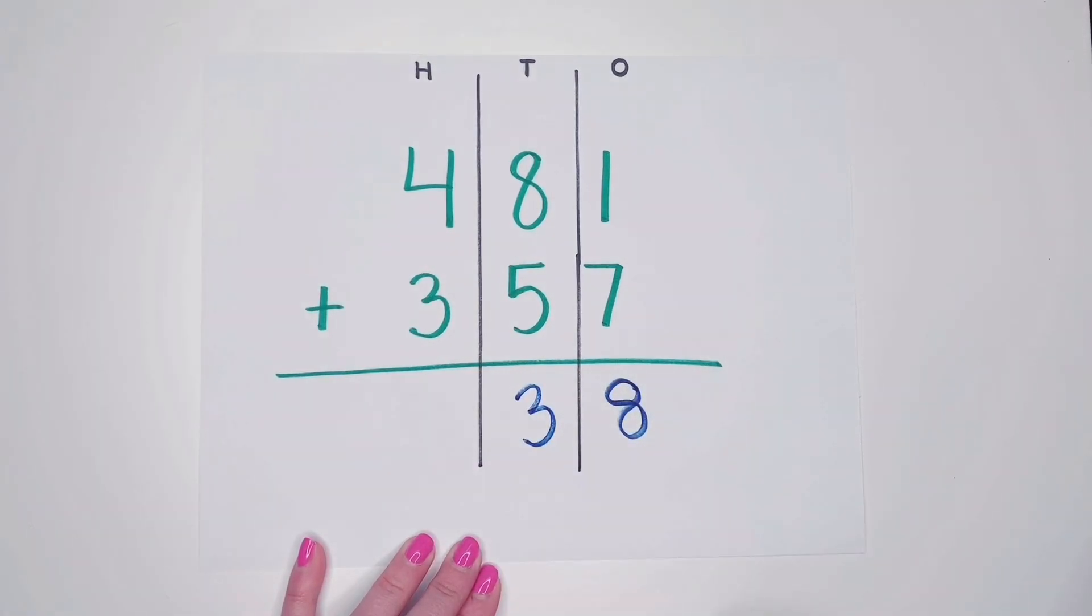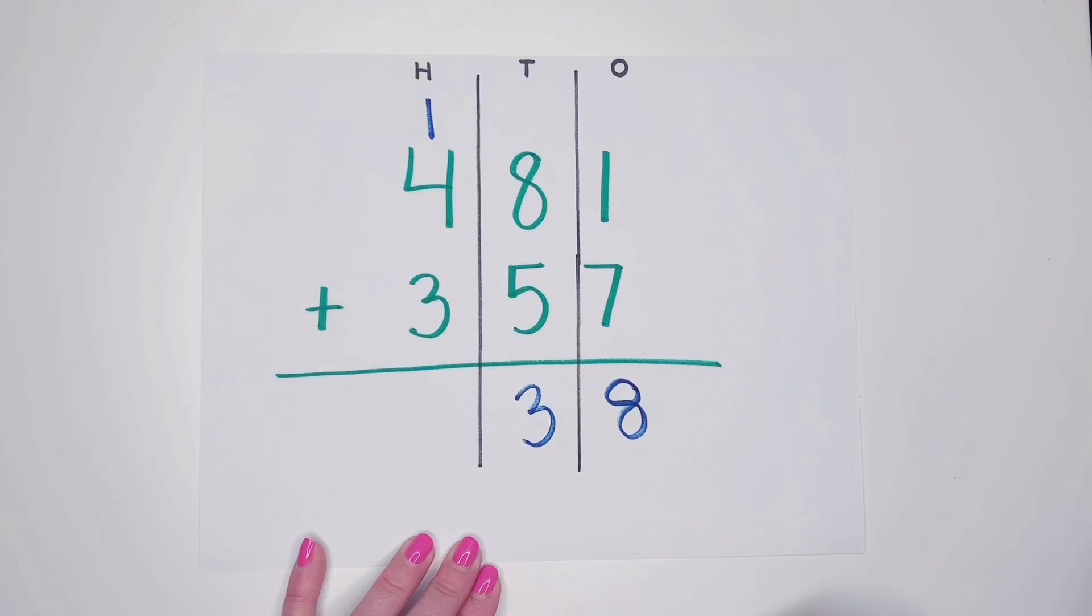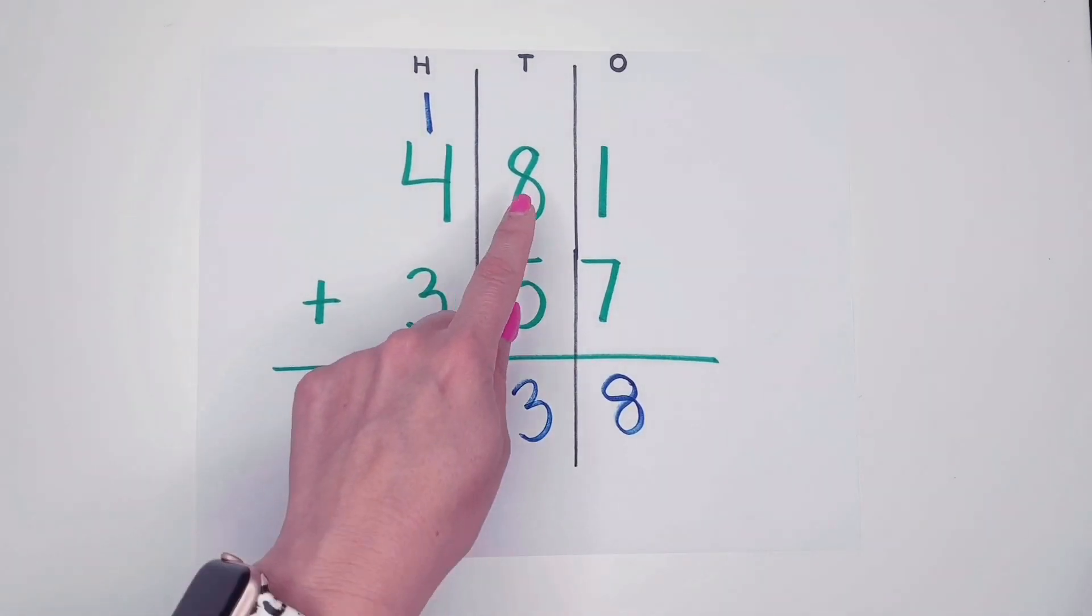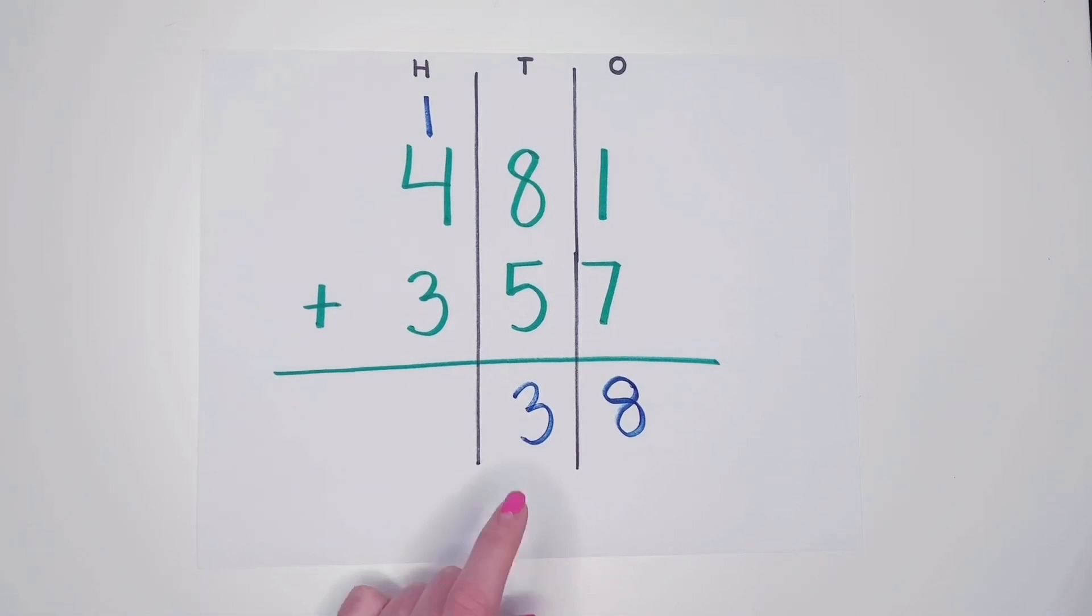So the three goes down below and our one goes up above our four. So this is really saying eight tens plus five tens is thirteen tens. Well, we can't have thirteen tens in the tens column. We can only have nine tens in the tens column.